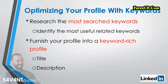Research your desired clients and make a list of common keywords used within that field and industry. You can also use the Google AdWords keyword tool to figure out which terms will increase your likelihood of being discovered when searched. After you've identified the most searched and related keywords, your next step is to furnish your profile into a keyword-rich profile. First of all, make sure that your job title uses keywords that people will likely use when searching for the expertise you offer. For example, if you're an expert in copywriting, make sure the phrase 'copywriter' appears in your job title.